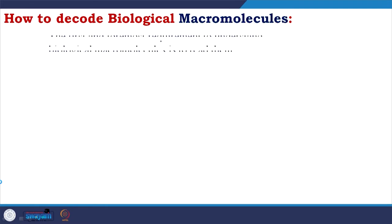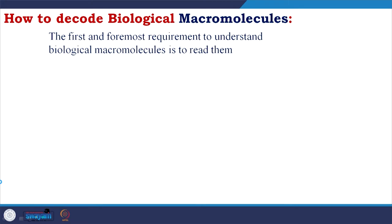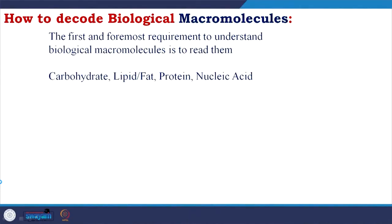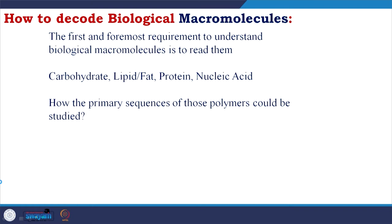How to decode biological macromolecules? The first and foremost requirement to understand biological macromolecules is to read them — you have to know about their basics, how the monomers are forming polymers. We are targeting three polymers: carbohydrate, protein, and nucleic acids, and we are also interested in lipid and fat. How can the primary sequence of those polymers be studied? What are the challenges? What are the possibilities of improvement in terms of instrumentation and technical development? We will try to make a preliminary discussion. This is not the core topic of our study, but if you do not know how to read the basics, you should not go to the higher level.